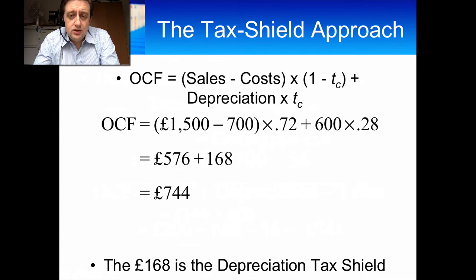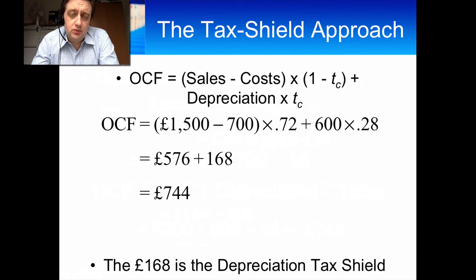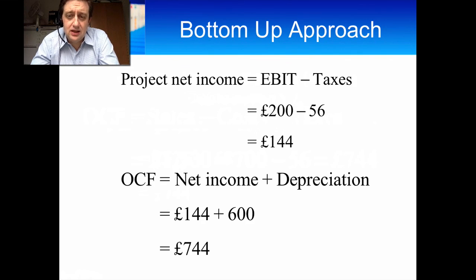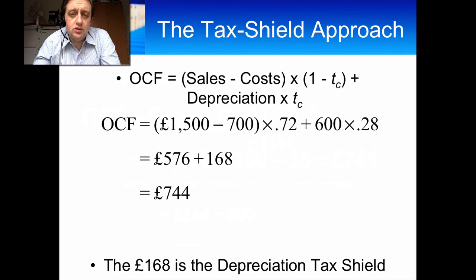This method doesn't seem intuitive upfront — the bottom up and top down approaches seem much clearer — but it's an important method for a lot of the other work we do later. So hopefully it's been a very quick video showing you the three different methods to calculate operating cash flow. My favourite is the bottom up approach: just get to the net income and add back depreciation. If you look at the case study for chapter seven, section 7.2, you'll see that's the method I used. But you can use any method you want. Thank you very much.